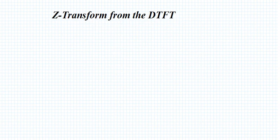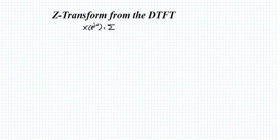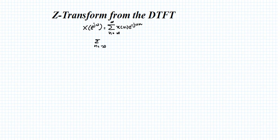Now we will see how we can get the Z-transform from DTFT. The Z-transform is actually a modified version of DTFT. The general formula for X(e raised to j omega) is: X(e^jω) = sigma n equals minus infinity to infinity, x(n) into e raised to minus j omega n. The condition to evaluate this is that the signal x(n), summed from n equals minus infinity to infinity with modulus of x(n), should be less than infinity — meaning the signal must be absolutely summable.